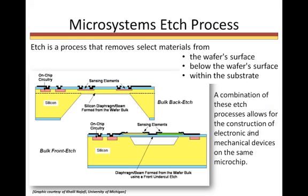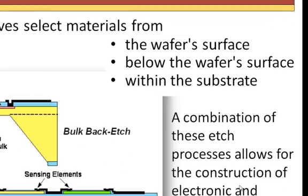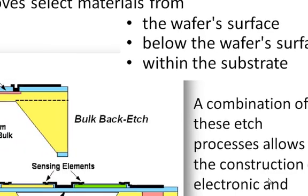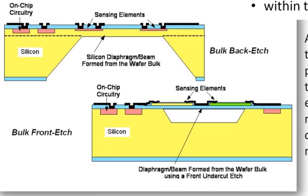For Microsystems Fabrication, etch is a process that removes select materials from the wafer surface, below the wafer surface, or from within the substrate. In this graphic, we can see all three. Surface etching created the sensing elements and on-chip circuitry. Bulk etching created the opening underneath the sensing element and the back-etched cavity.